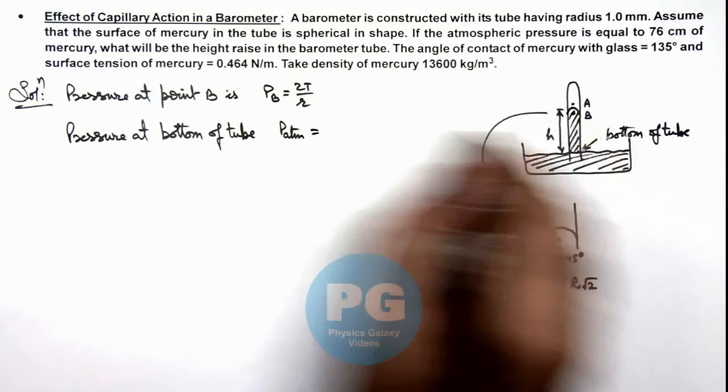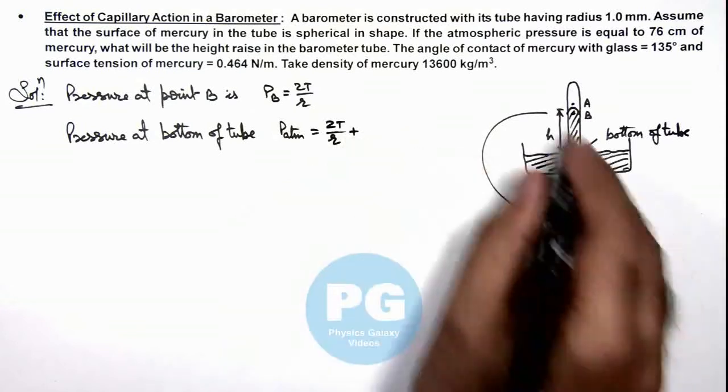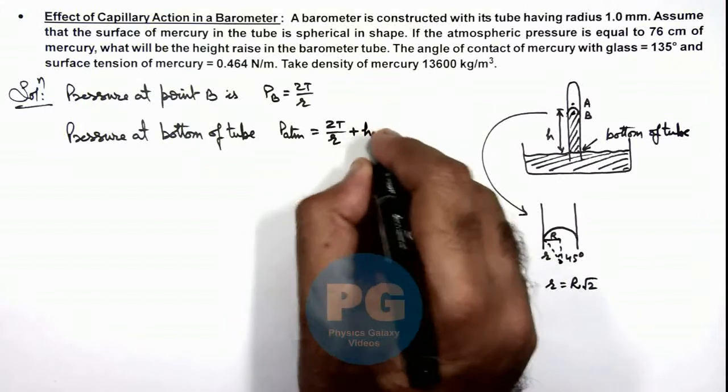In this situation, the value of P atmosphere we can write as, at point B pressure was 2T by r, added to the gauge pressure due to the weight of mercury column, which is h rho g.